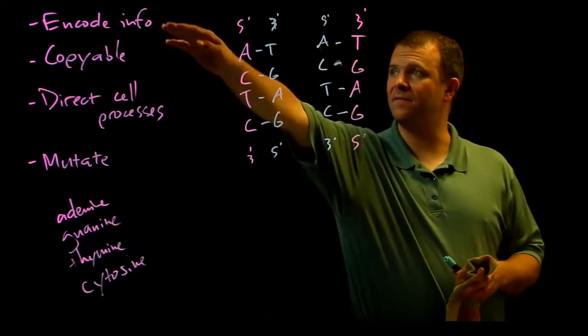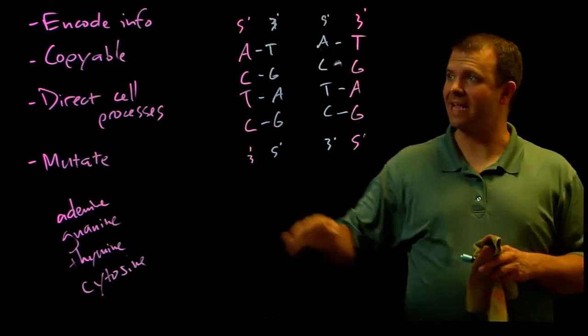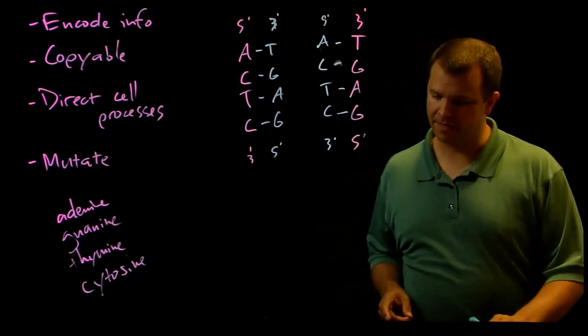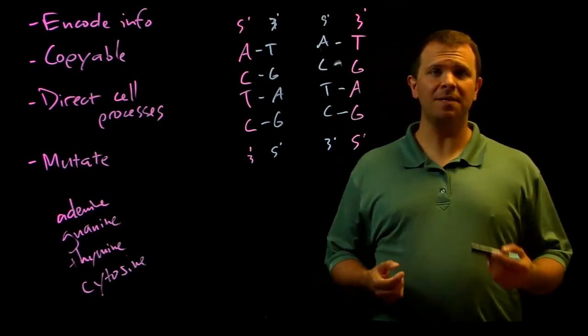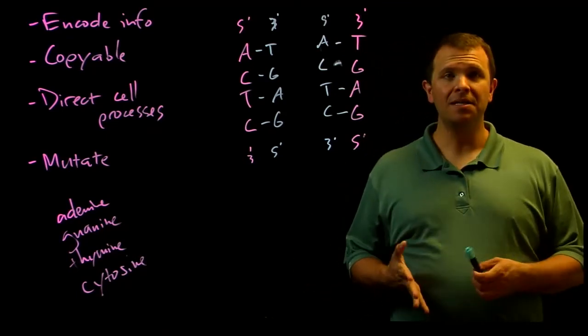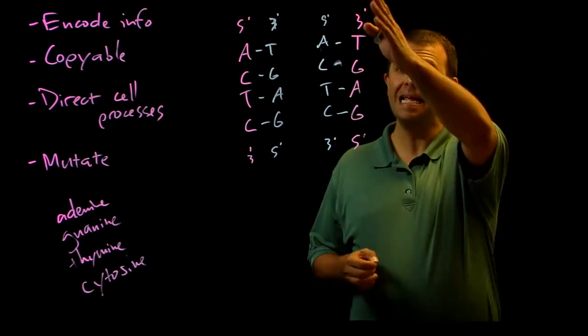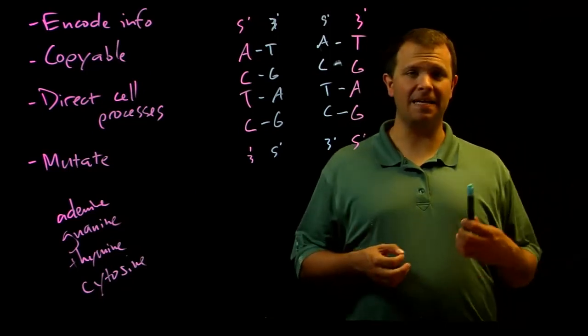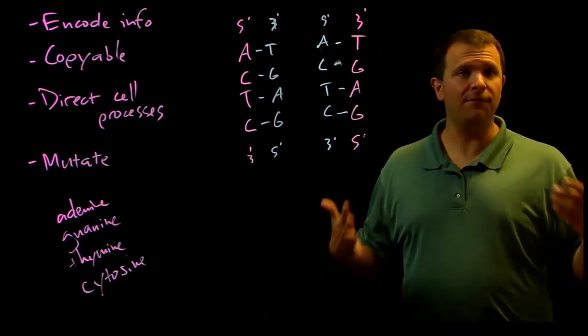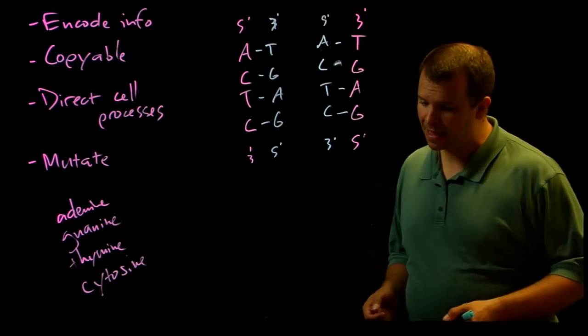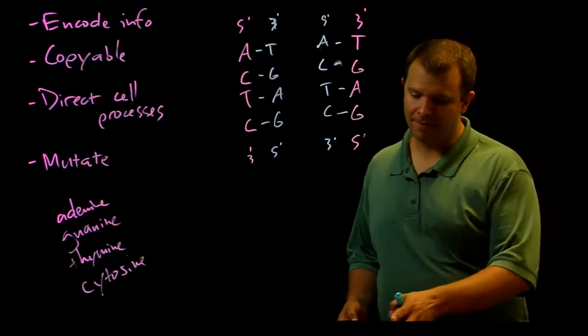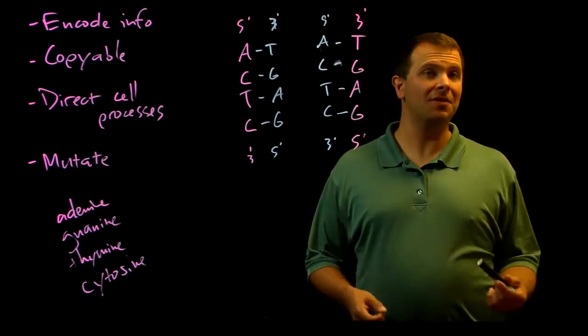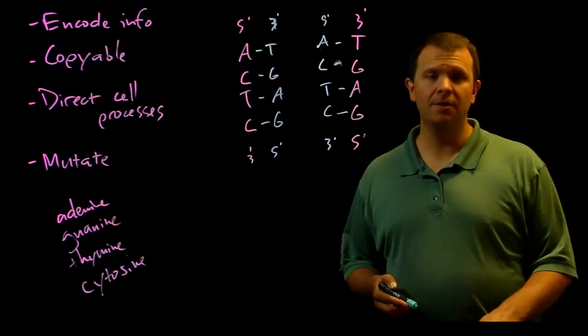So we've taken care of information encoding. We've taken care of how it's copyable based on its structure. What about the other two necessary properties? We know that the sequence of DNA has to encode some sort of information in these bases, but what is that information? How does that information direct the functioning of the processes of a cell and how can it change? And to answer that question, we actually need to have a quick review of another class of biological molecules, which are proteins.